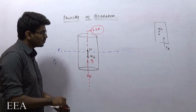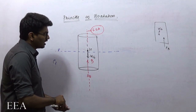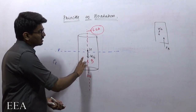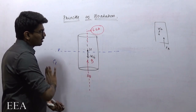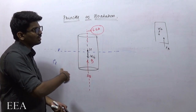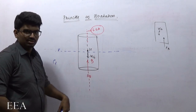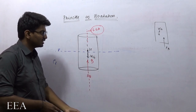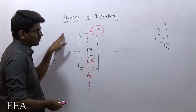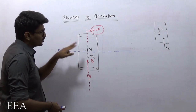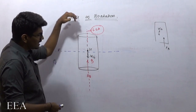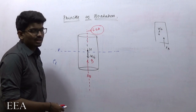If the center of buoyancy shifts away from the line of action of the center of gravity, we will discuss those things further. But if the body has to float, then both the weight and buoyancy force have to lie in the same line of action.